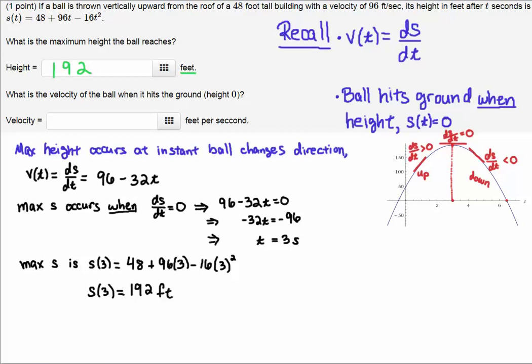Then the max height - we plug this three seconds into the position function to determine what the height is. You get 192 feet, which is over 150 feet, so it looks about right. Our geometric intuition goes along with what the arithmetic is telling us.